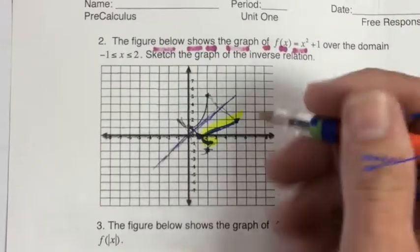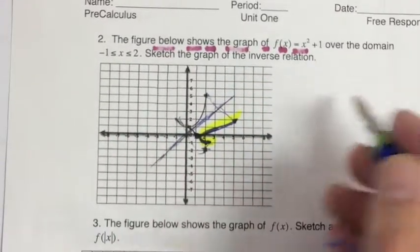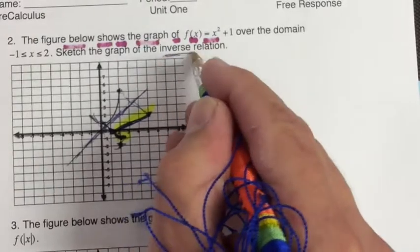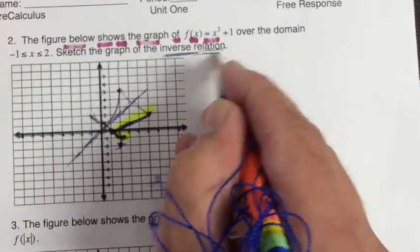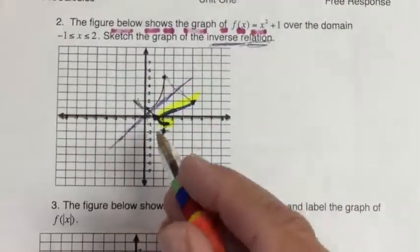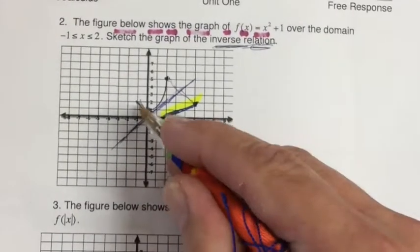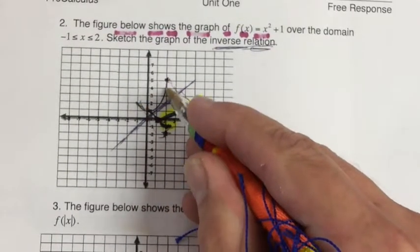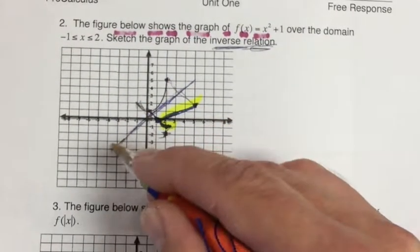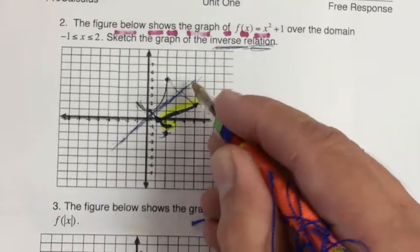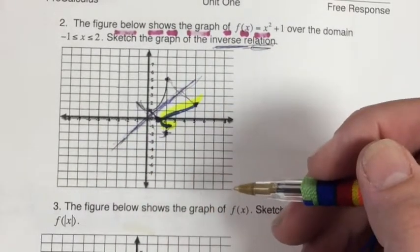If you are looking for the inverse relation, the graph of the inverse relation will be a reflection of the original graph across this line. So if that's what you're looking for, that's where you'll find it.